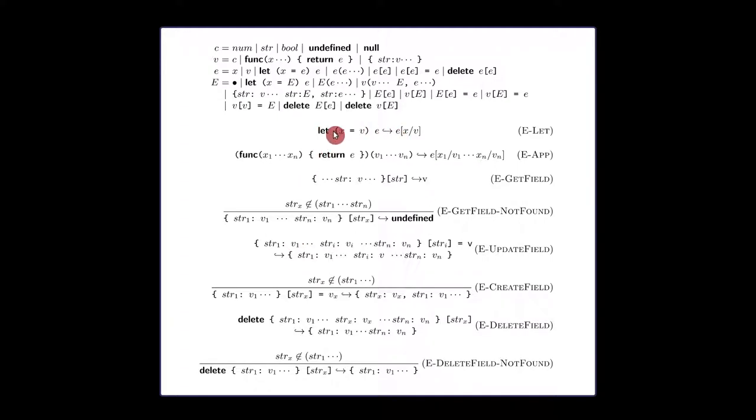If you have a let binder where you're assigning v to x and then continue with e, what you do if v is a value, you replace x by v. So substitution rule that you've learned before. If you have a function, how do you apply it? In this case, it's function application, assuming all expressions are already values.